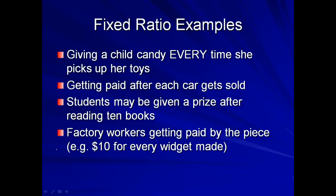Some fixed ratio examples: giving a child candy every time she picks up her toys — that's continuous as well as fixed ratio. Getting paid after each car gets sold. Students given a prize after reading 10 books. Or factory workers getting paid by the piece — for example, $10 for every widget they make. These are fixed ratio: based on behaviors, and once the behaviors have been done a set number of times, they get reinforced.